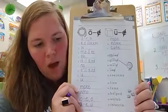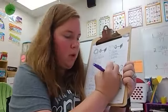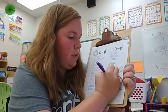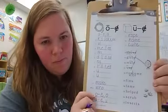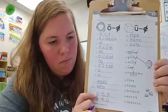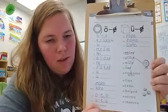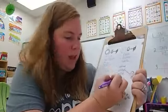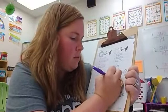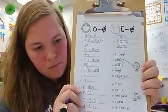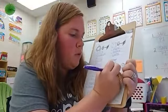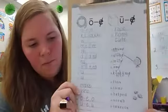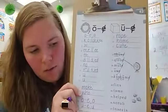Number 22 is costume. First, I see the VCCV pattern, so I'm going to separate it. The C at the beginning makes the K sound. The O does not say O, it says AH. And then we have U consonant E. Costume.